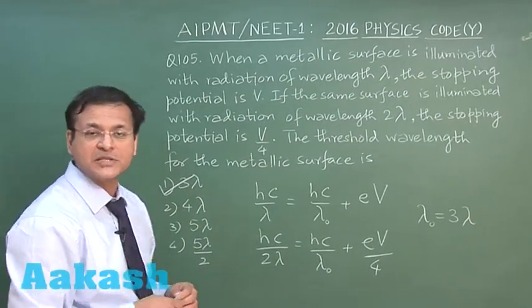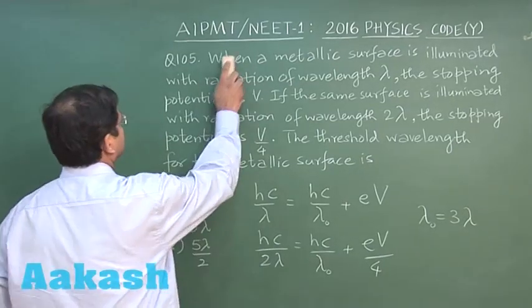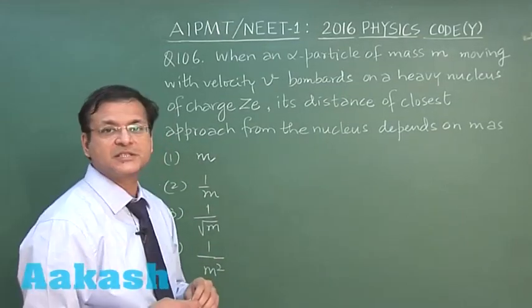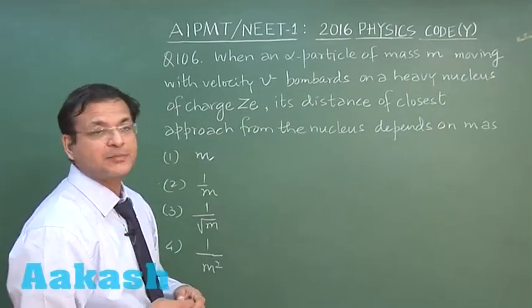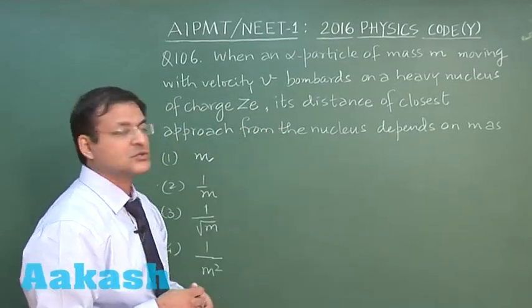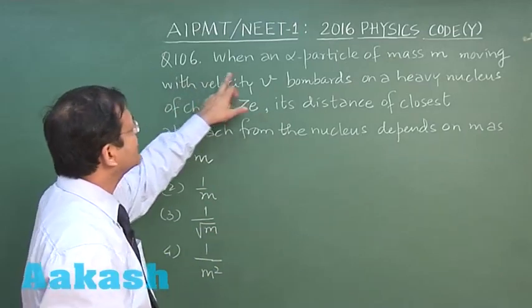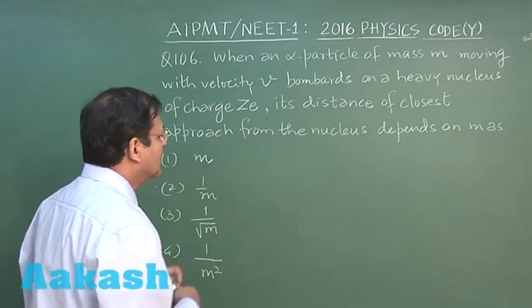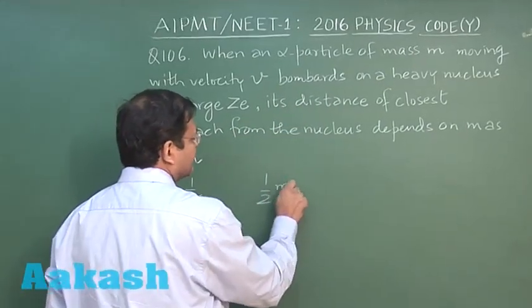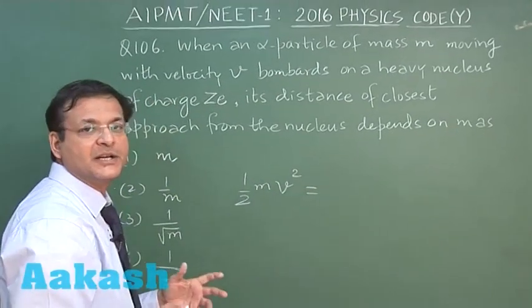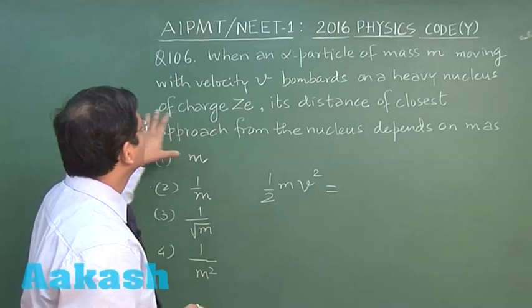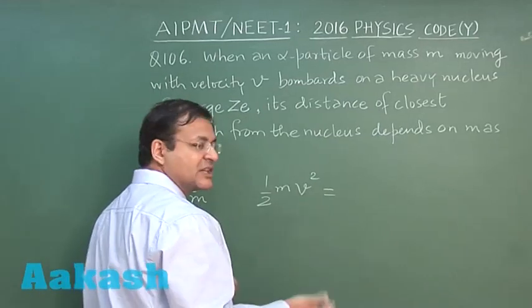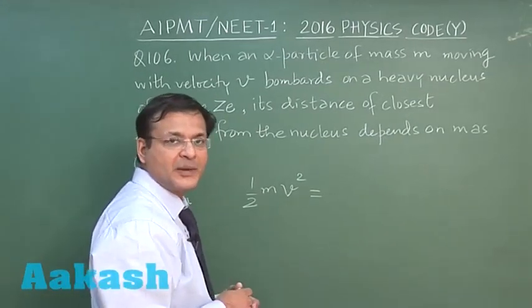Now let us switch over to next question, that is question 106. Now this question 106 is based on Rutherford experiment. Here distance of closest approach and its proportionality to mass has been demanded. It says that when an alpha particle of mass m, moving with velocity v, bombards a heavy nucleus, so alpha particle happens to have this kinetic energy half mv square, and that gets completely converted into electrostatic potential energy. So it is bombarding a nucleus of charge ze.